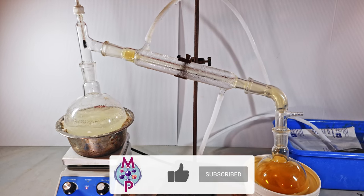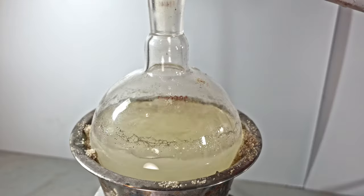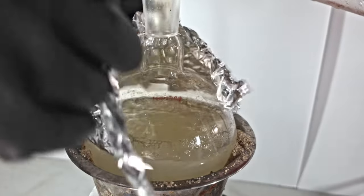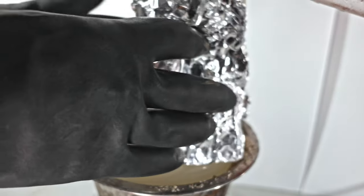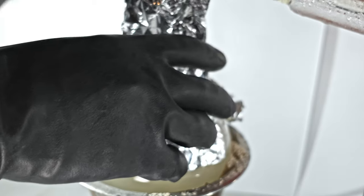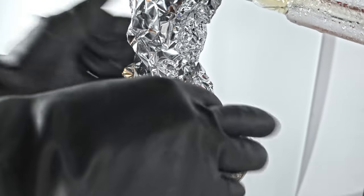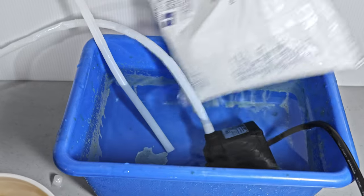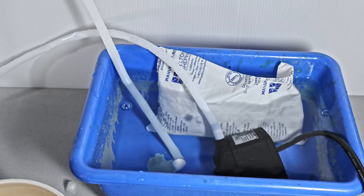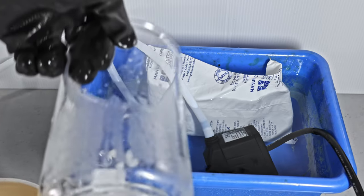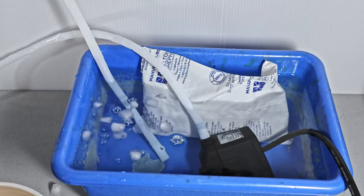Once your reaction starts going, you're going to need to make some modifications. The first thing you need to do is wrap your flask in tin foil. This will insulate heat and shield it from light, which can break down your nitric acid into nitrogen dioxide. You also want to put an ice pack in your water basin. This will keep it cold and your nitric acid will spend less time in the vapor phase.